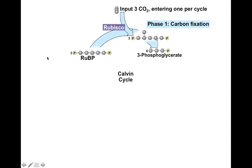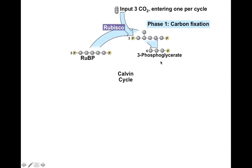Working through the coefficients: three CO2 molecules enter and are combined with three molecules of RuBP. Those form three unstable six-carbon molecules, which break down into six molecules of 3-phosphoglycerate. So we had three five-carbon molecules plus three one-carbon molecules forming three six-carbon molecules, which immediately split into six three-carbon molecules.